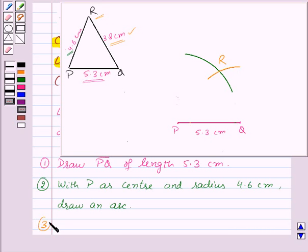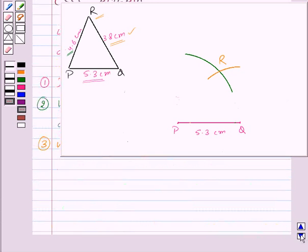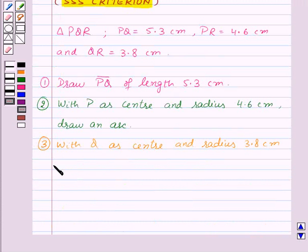Our third step of construction is with Q as center and radius 3.8 cm, draw an arc to cut the previous arc at point R.